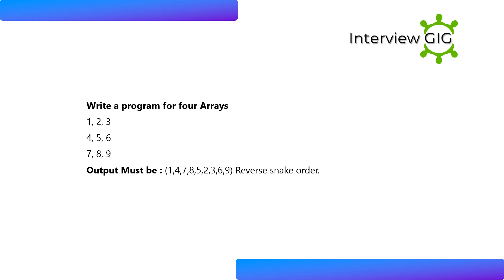Write a program for a 4-element array [1, 2, 3, 4, 5, 6, 7, 8, 9]. The output must be in reverse snake order: 1, 4, 7, 8, 5, 2, 3, 6, 9.